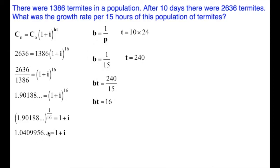It goes on forever. That is equal to 1 plus our growth rate. To get the growth rate alone, I'm going to subtract 1 from both sides. That is going to give us 0.0409956, which is our growth rate.